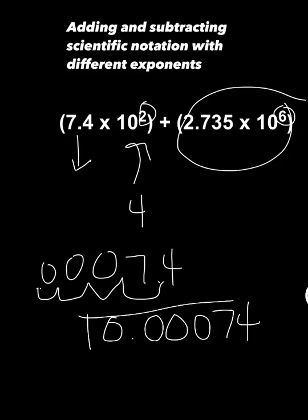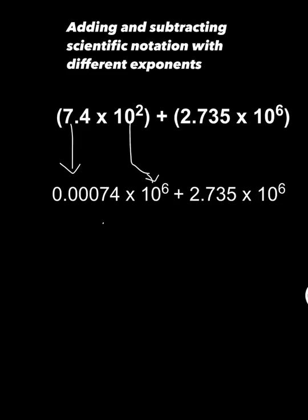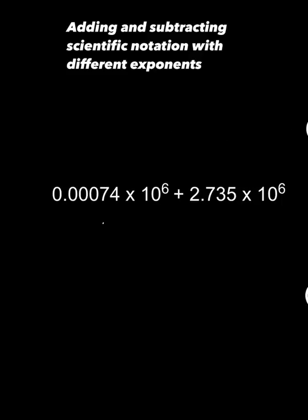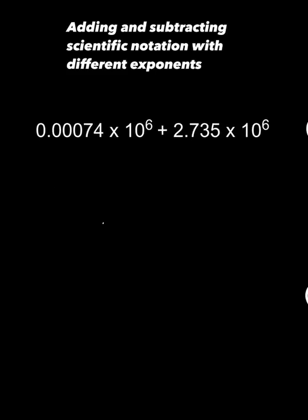So my new decimal point is 0.00074 times 10 to the sixth power plus 2.735 times 10 to the sixth power. So now I can just forget about this and focus on this. Now that my exponents are alike, I can add my decimals.